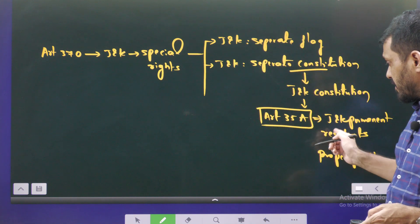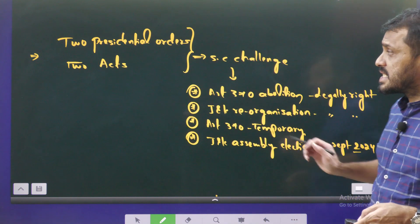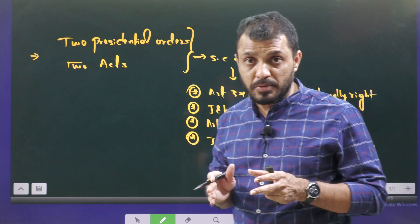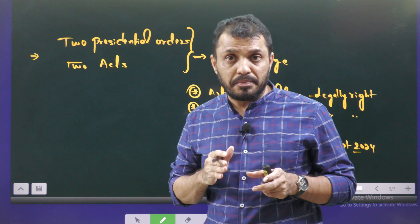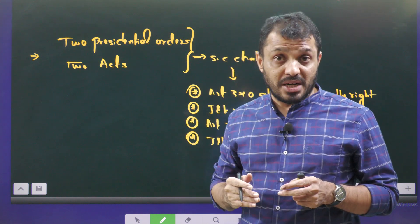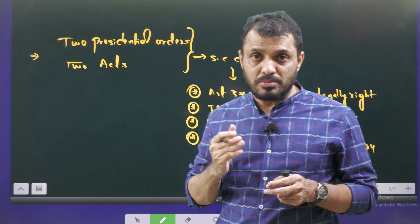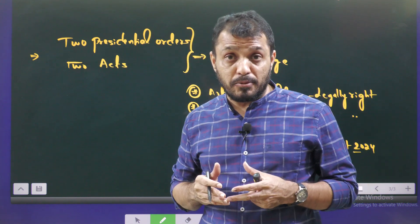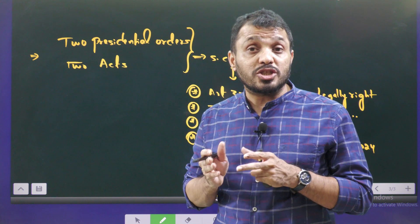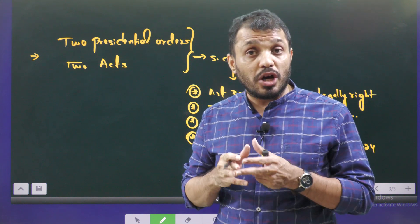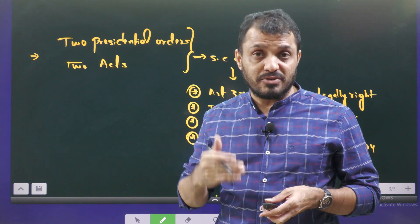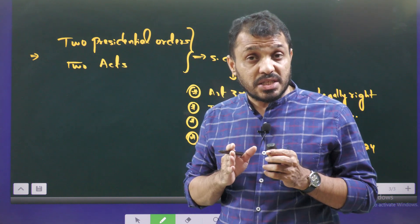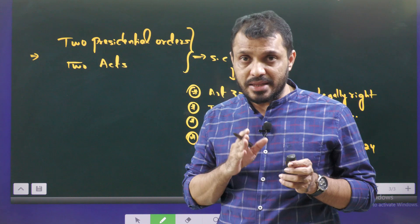Article 35A, inserted in 1954, gives special provisions regarding property rights to Jammu & Kashmir people. According to Article 35A, only permanent residents of J&K can buy property there. Non-J&K people cannot claim scholarships in J&K. Also, if a J&K woman married someone from outside J&K, she would lose all property rights. These were the strict norms under Article 35A.